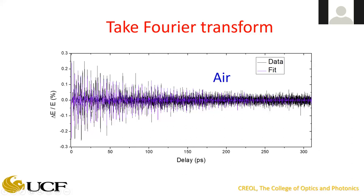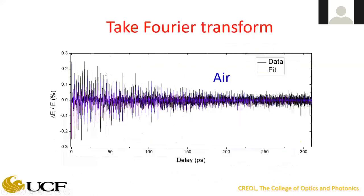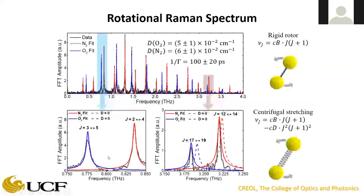If you Fourier transform that time-domain signal, you get the Raman spectrum in terahertz — the blue curve is oxygen, the red is nitrogen. It's basically an optical frequency comb, just like from a mode-locked laser, except it's not a perfect comb due to centrifugal distortion: at high values of J, centrifugal stretching shifts those lines slightly, so the comb is slightly distorted. That, along with collisions, helps with the decay of the revivals.